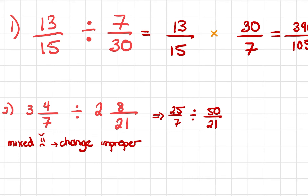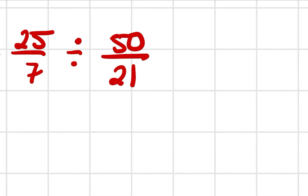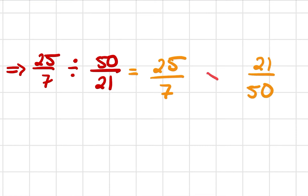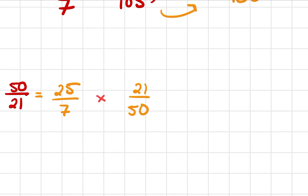Now I can do the steps needed to divide: keep the first fraction as is, find the reciprocal of the second fraction, and then multiply. So we multiply across the top and multiply across the bottom, and we get big numbers: 525 over 350.